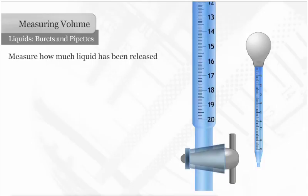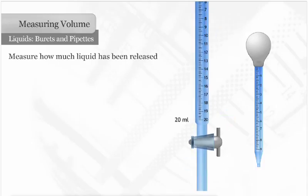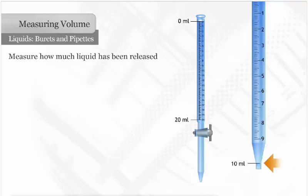This burett is used to measure up to 20 milliliters of liquid, and this pipette is used to measure up to 10 milliliters of liquid.